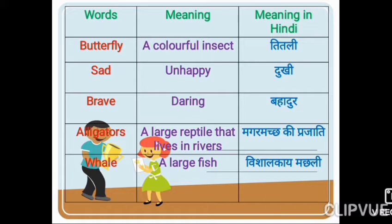Number one: butterfly. B-U-double T-E-R-F-L-Y, butterfly. English meaning: colourful — C-O-L-O-U-R-F-U-L — colourful. Insect — I-N-S-E-C-T — insect.